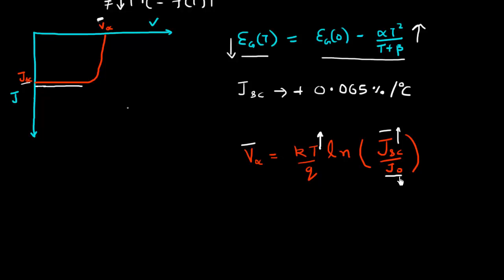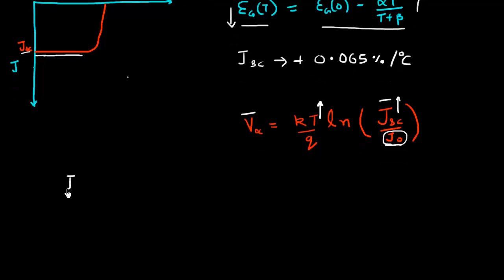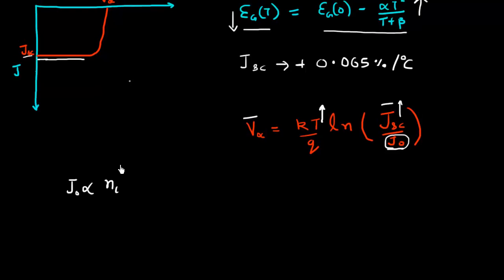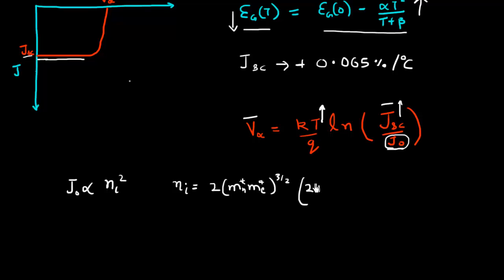But in fact, that is not true. The reason is that the J₀ term depends on the square of the intrinsic carrier density, ni². Intrinsic carrier density in turn depends upon the density of states for electrons and holes effective masses, and it also depends upon the band gap of the cell. This relationship defines ni using a pretty complex expression with temperature dependence coming from the density of states term and from the band gap term.